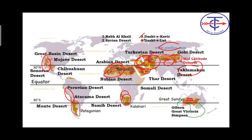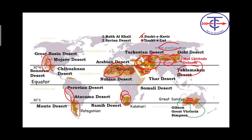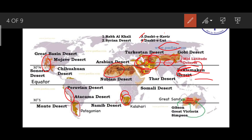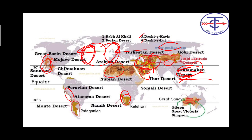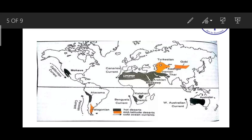Now, why are these deserts prominent on the western coast? In tropical areas, winds blow from east to west — these are offshore winds. When winds blow offshore, moving away from the continent, they lose moisture before reaching the western coast. By the time these winds arrive, the water content is exhausted, making them dry. That is why most deserts in tropical areas lie on the western coast.